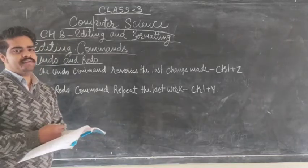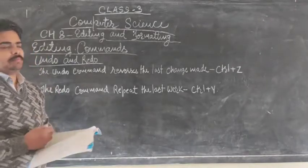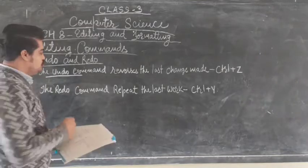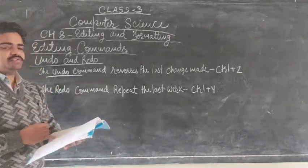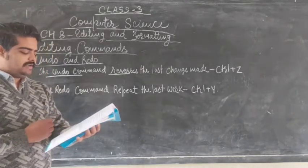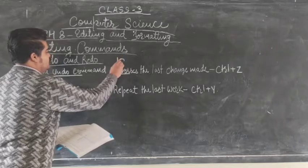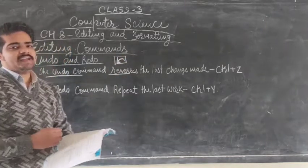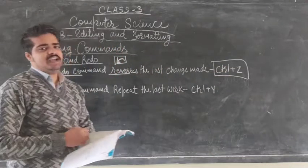The fifth editing option in MS Word is the Undo and Redo command. The Undo command reverses the last changes made in MS Word. You can use the Undo command by going to the Quick Access Toolbar and clicking the Undo icon, which is a left-side arrow. Or press the shortcut key Ctrl+Z to undo.